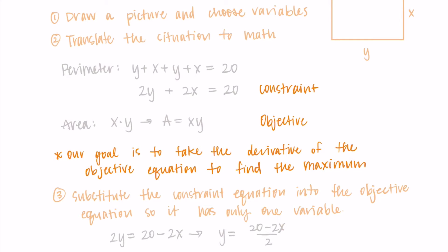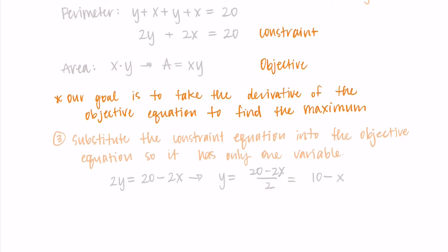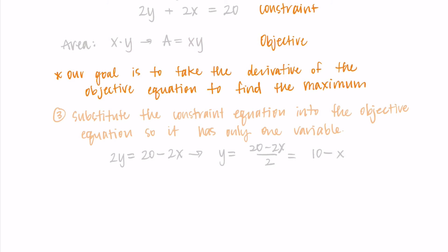I'm going to move the 2x to the other side and then divide by 2, so I'm getting that y is (20 - 2x)/2, which if we distribute that 2 into both terms is just 10 - x. Now I can take that y = 10 - x and substitute it into my area. So instead of area equals x times y, I can write it as x times (10 - x), and distributing I get that the area is 10x - x².